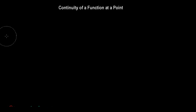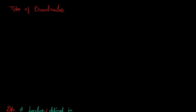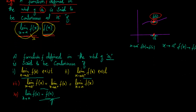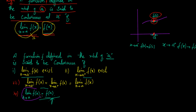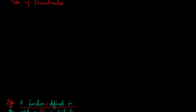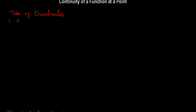Let me write down the heading with red ink: Types of Discontinuities. The first one we shall take is when the limit exists but it is not equal to f(a). This type of singularity we call a removable singularity. So here we have the first type, which is known as removable discontinuity.